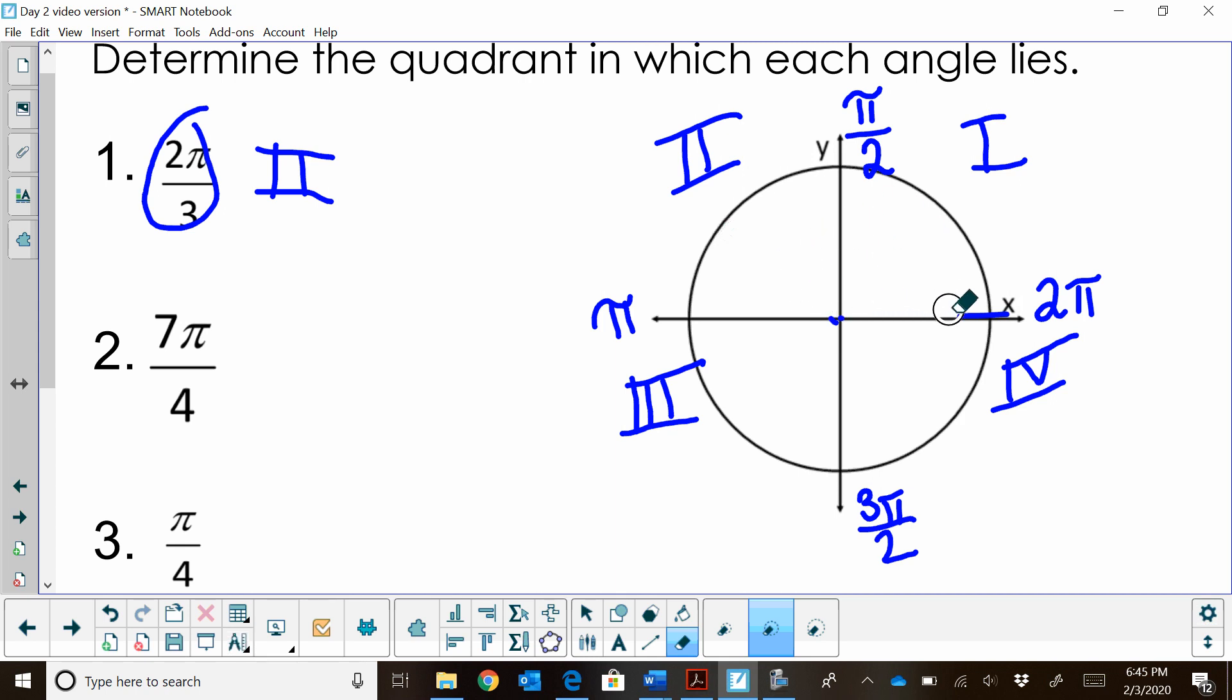So now let's try drawing seven pi fourths. We're going to start on the x-axis, and we're going to rotate seven pi fourths. Well, right here would be, if we get all the way to pi, that's four pi fourths, and that's five pi fourths, six pi fourths. So seven pi fourths is going to land over here in the fourth quadrant. So that's going to be quadrant four.